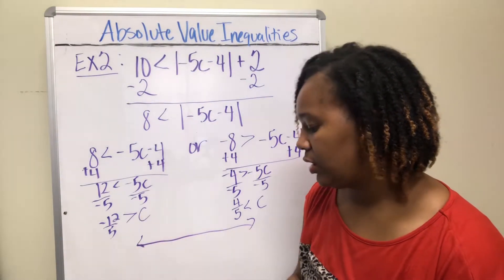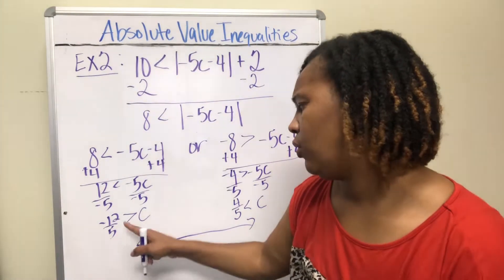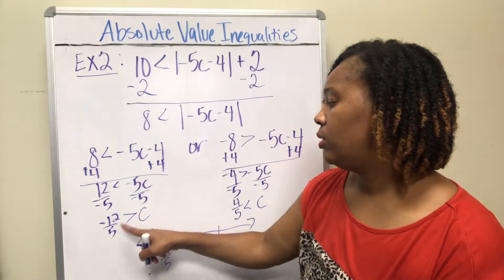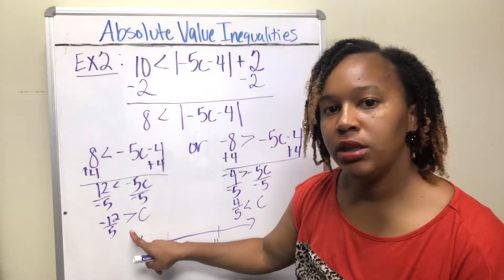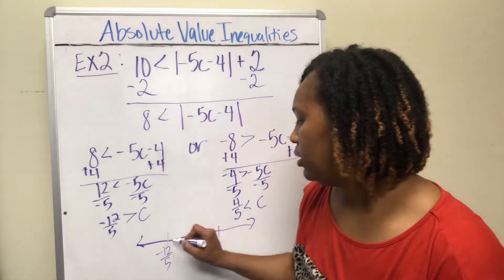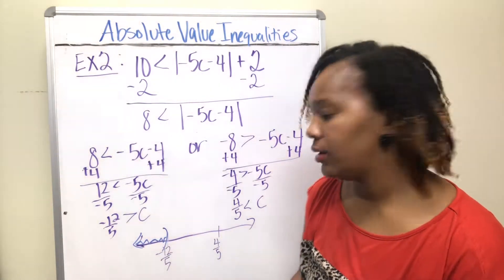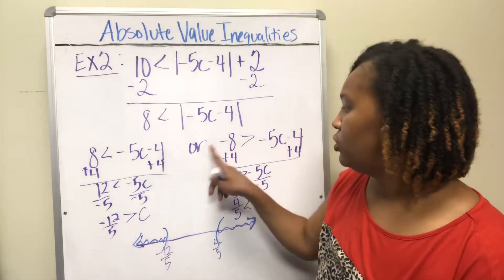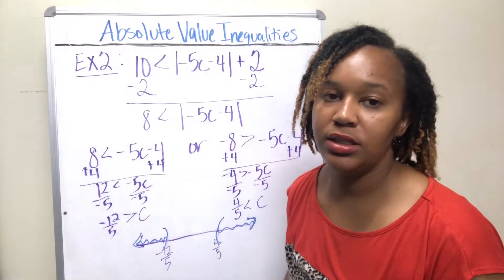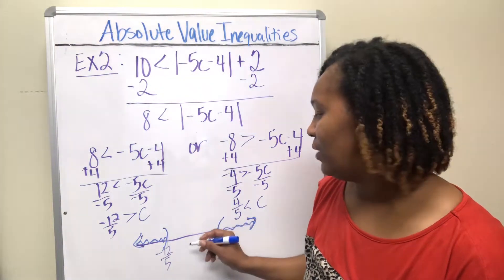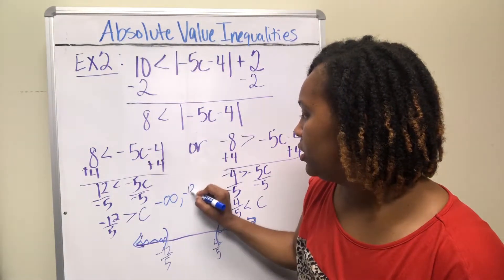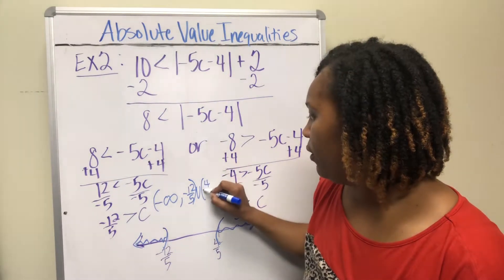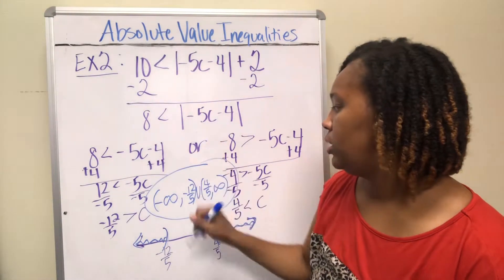−12/5 is to the left and 4/5 is to the right on the number line. The first solution says c is everything less than −12/5 — no line underneath, so use a parenthesis, shading left. The second says c is everything greater than 4/5 — parenthesis, shading right. Since combined with 'or', the solution in interval notation is (−∞, −12/5) ∪ (4/5, ∞).